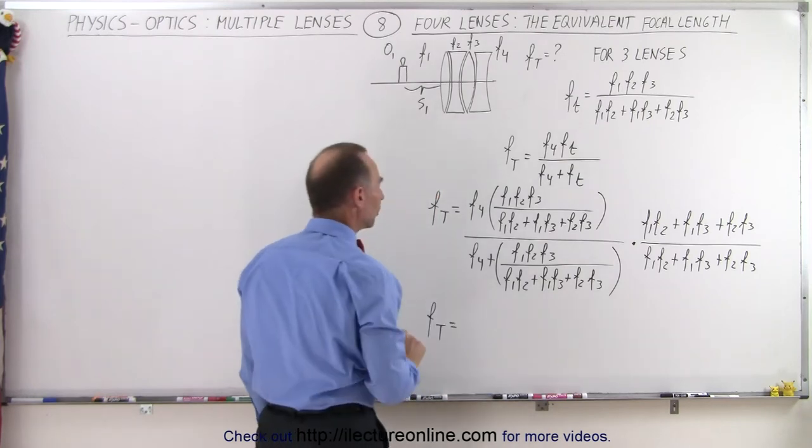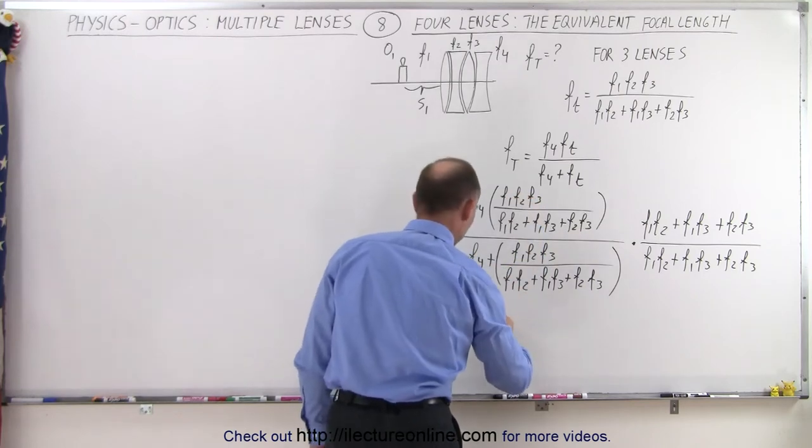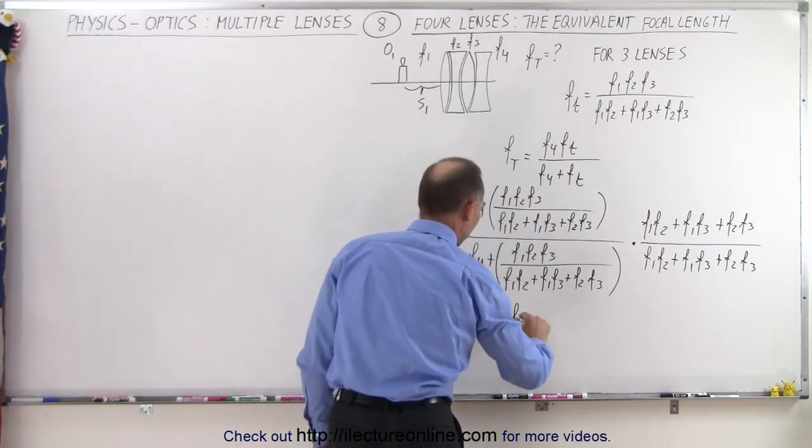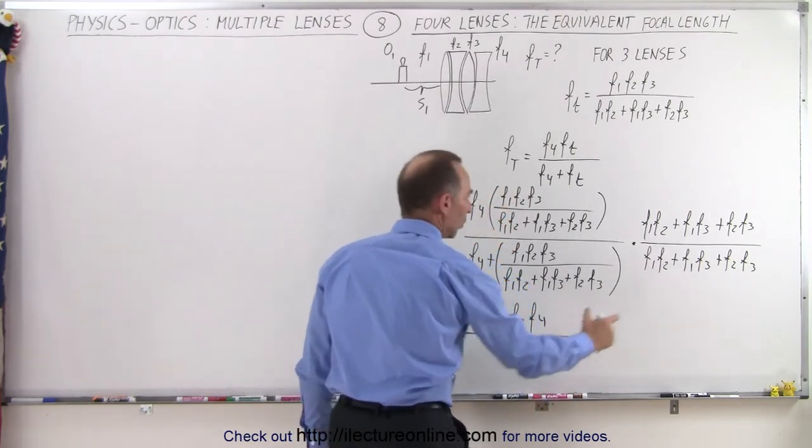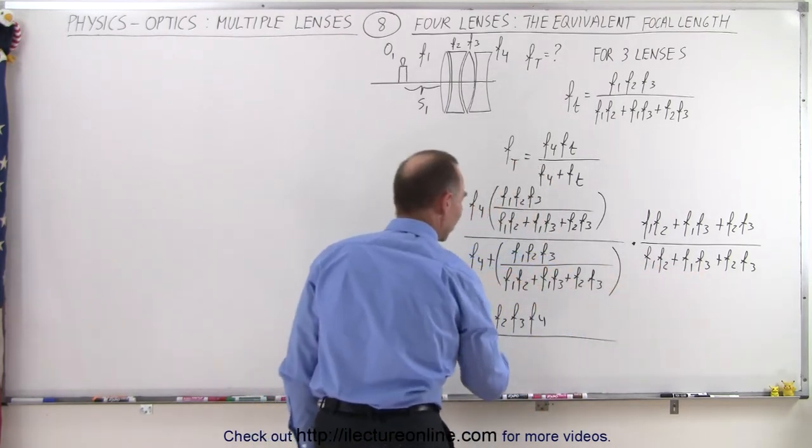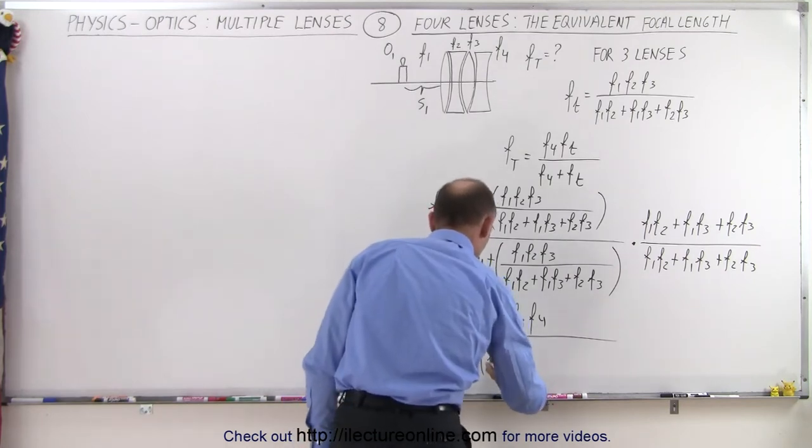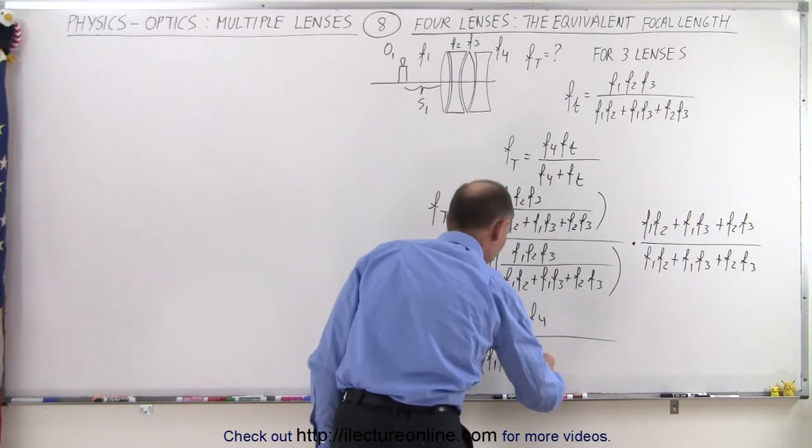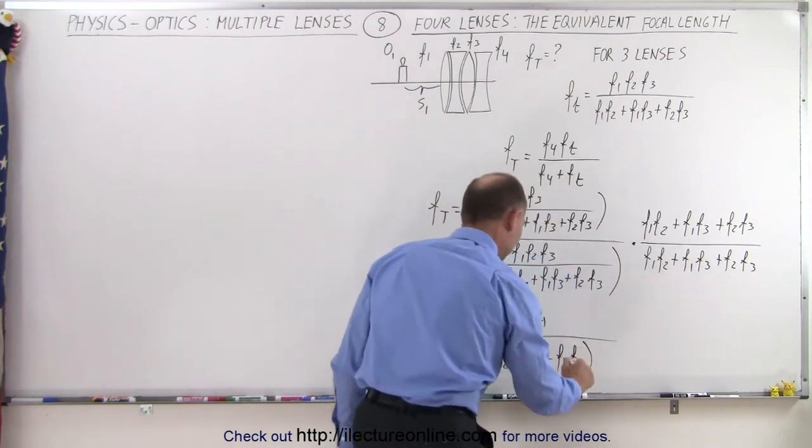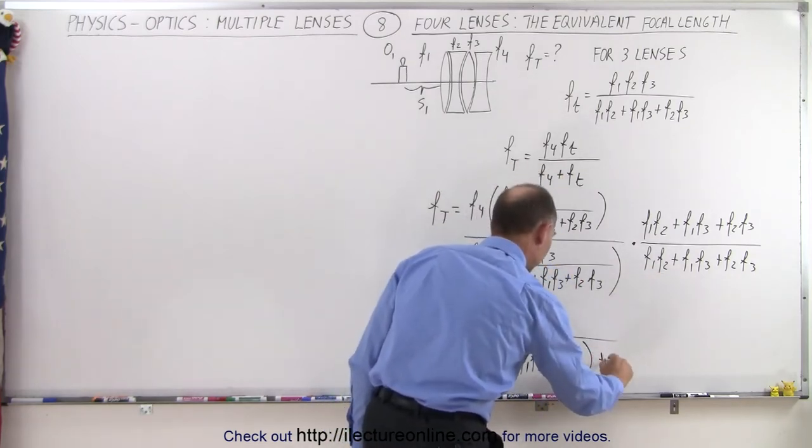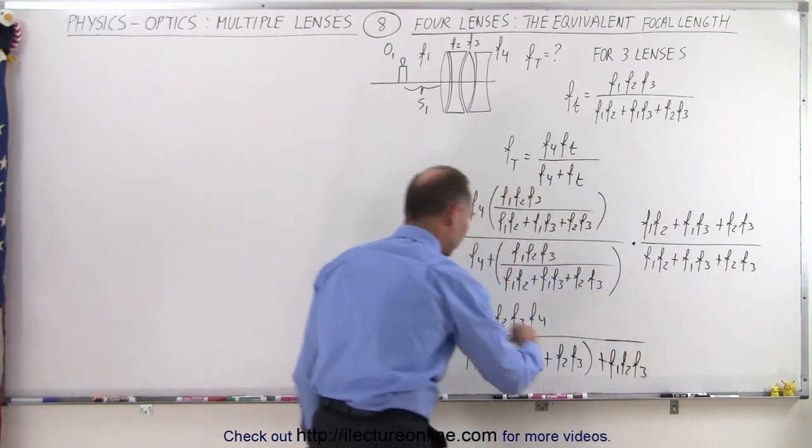So then the new equation becomes F total equals, this is now gone, so we are left with in the numerator F1 F2 F3 F4, all divided by multiplying this times this, we end up with F4 times F1 F2 F3. So it's multiplying F4 times this, and I have to add to that plus what I have in here, and then if we multiply all that out,